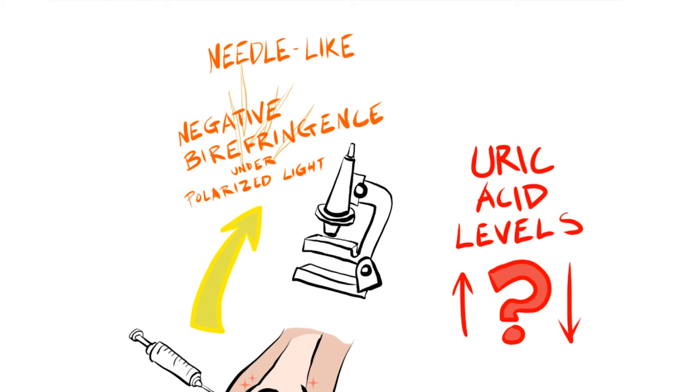Gout must be distinguished from other causes of joint pain including septic arthritis. Septic arthritis is a bacterial infection of the joint. Gout has been called the great masquerader because its signs and symptoms are very similar to those of septic arthritis. If joint fluid can be obtained, a gram stain can be performed to look for bacteria.